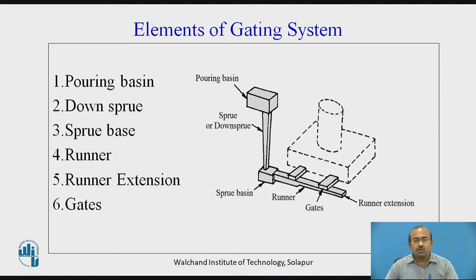Let us move to the elements of gating system. The figure shown on the screen elaborates the gating system itself. The elements of the gating system are: pouring basin, downsprue, sprue base, runner, runner extension, and gates. The dotted portion shown is the casting geometry. These elements are interlinked and shown in a three-dimensional isometric figure.